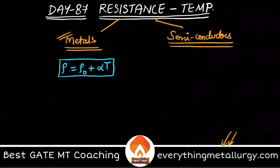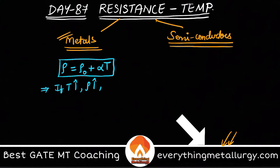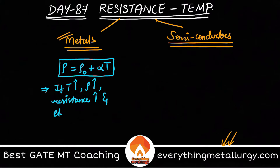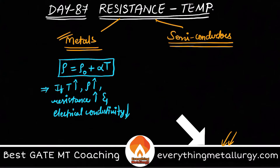In metals, if temperature T increases, resistivity ρ increases, and therefore resistance also increases. This means electrical conductivity will come down — electrical conductivity will reduce. So for pure metals, as we increase the temperature, resistivity increases and electrical conductivity is reduced.